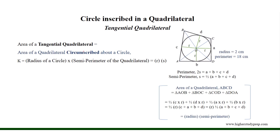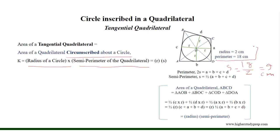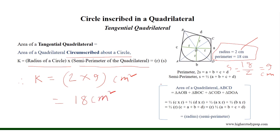Area of a tangential quadrilateral: the area of a quadrilateral circumscribed about a circle equals the radius of the circle inscribed about the quadrilateral multiplied by the semi-perimeter of the quadrilateral. Here, the semi-perimeter of the quadrilateral will be half of 18 cm, which equals 9 cm, because it is given that the perimeter equals 18 cm and the radius of the inscribed circle is 2 cm. Therefore, the area of the tangential quadrilateral equals 2 times 9 cm², which results in 18 cm².